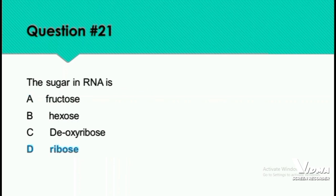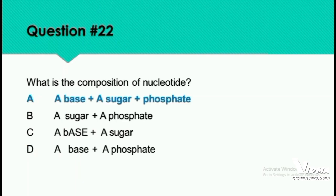Question 21: The sugar in RNA is called ribose. Question 22: What is the composition of a nucleotide? A nucleotide is composed of a base, a sugar, and a phosphate group. Option A is the right answer.